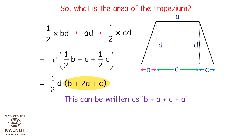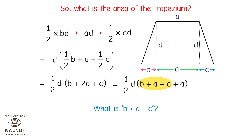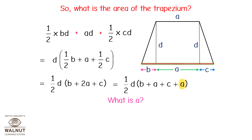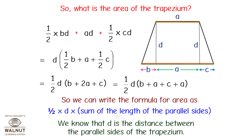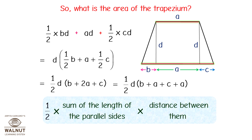Taking half common, we get half into d into (b plus 2a plus c), which can be written as half into d into (b plus a plus c plus a). Now, b plus a plus c is one parallel side of the trapezium, and a is the other parallel side. So the formula for area is half into d into sum of the lengths of the parallel sides. Since d is the distance between the parallel sides, area of the trapezium equals half into sum of the lengths of the parallel sides into the distance between them.